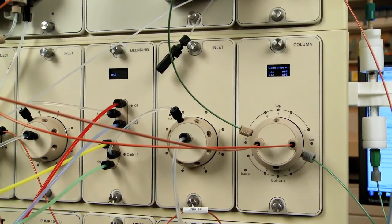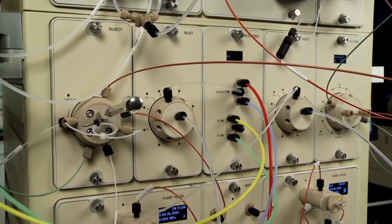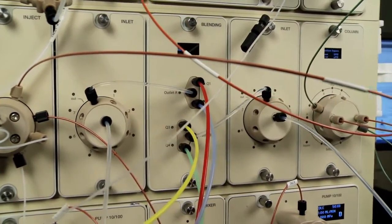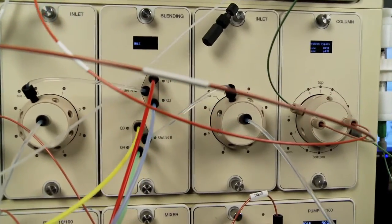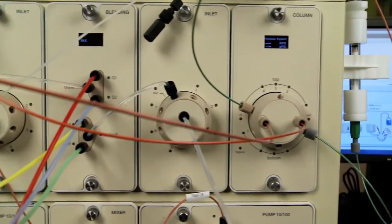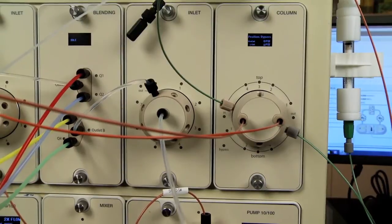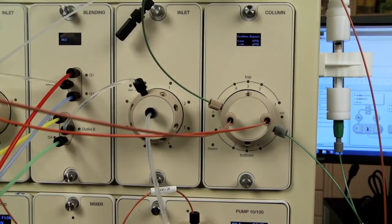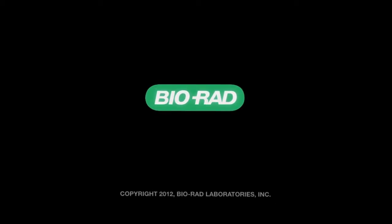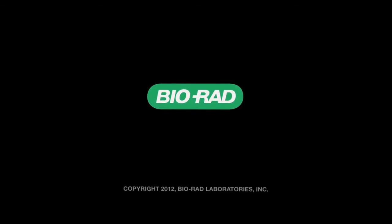You can now see what the final assembly would look like. Notice that the column switching valve inlets and outlets for the chosen position take the place of the injection valve and UV detector when placing your column.